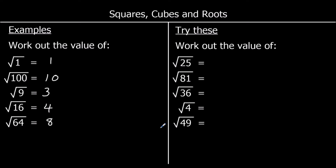What number times itself makes 25? That's 5 — 5 times 5 is 25 — so square root of 25 is 5. Square root of 81: 9 times 9 makes 81, so the square root of 81 is 9. 6 times 6 makes 36, so square root of 36 is 6. 2 times 2 makes 4, so square root of 4 is 2. And 7 times 7 is 49, so the square root of 49 is 7.